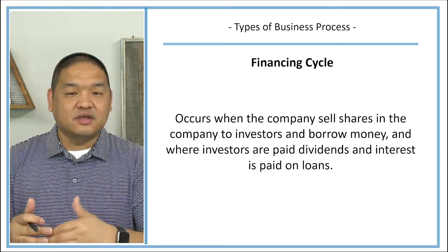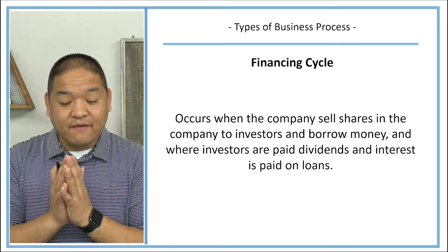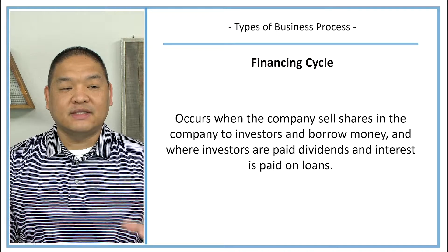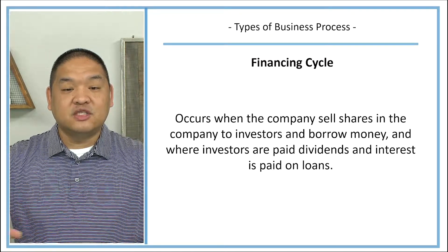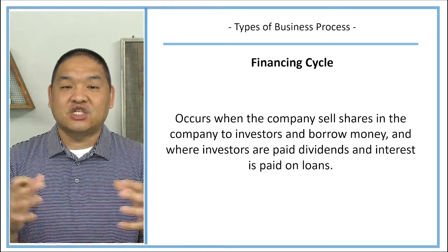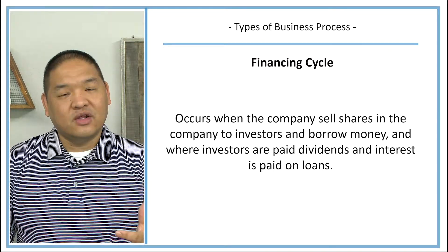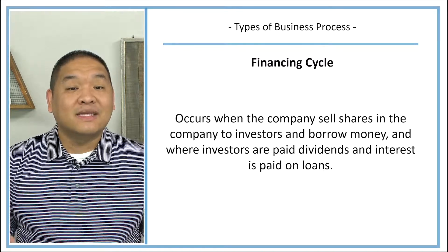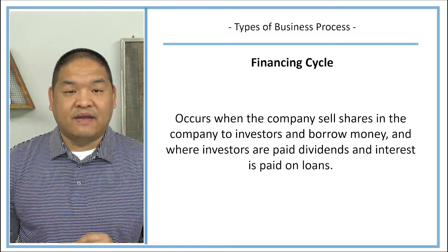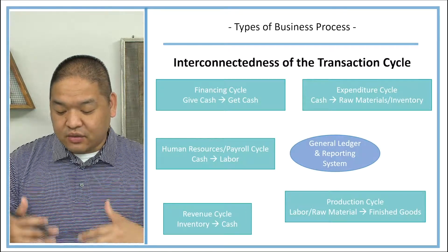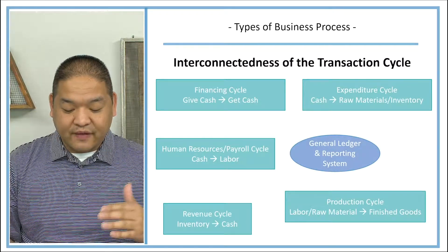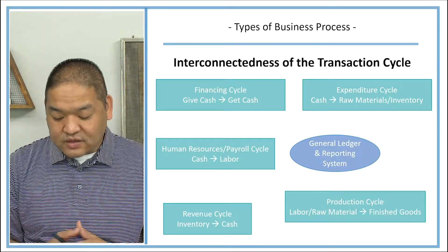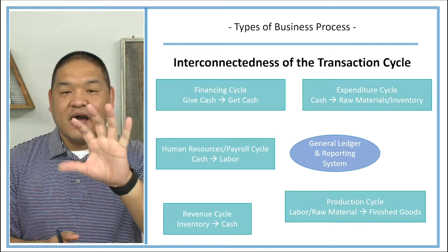Those are all the activities associated with each cycle. The job of these different business processes is to attain their own goals, and those specific goals help the organization as a whole to grow. Let's look at how all five business processes or transaction cycles work together within an accounting information system. We've got the expenditure cycle, financing cycle, human resources and payroll cycle, revenue cycle, and the production cycle — five cycles total, though some companies may have more or fewer.